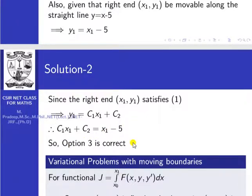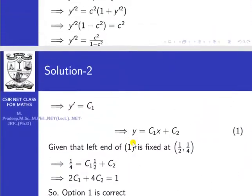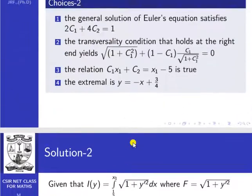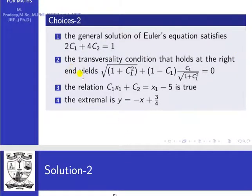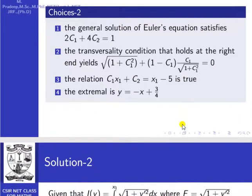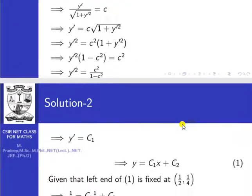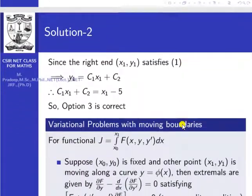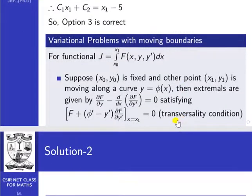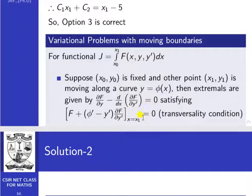Option 2 gives the transversality condition that holds at the right end. The transversality condition is: F plus (pi-dash minus y-dash) times ∂F/∂y-dash evaluated at x equal to x1 equals 0, where the moving end lies on the curve y equal to pi(x). Here one end is fixed and the other moves along a curve.